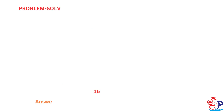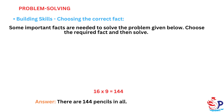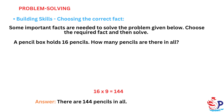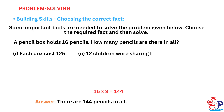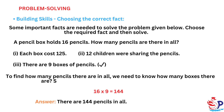Problem solving — Building skills. Pencils. Choosing the correct fact: some important facts are needed to solve the problem below. A pencil box holds 16 pencils. How many pencils are there in all? Facts given: each box costs 125; 12 children were sharing the pencils; there are 9 boxes of pencils. To find how many pencils there are in all, we need to know how many boxes there are. So choose fact: there are 9 boxes of pencils.